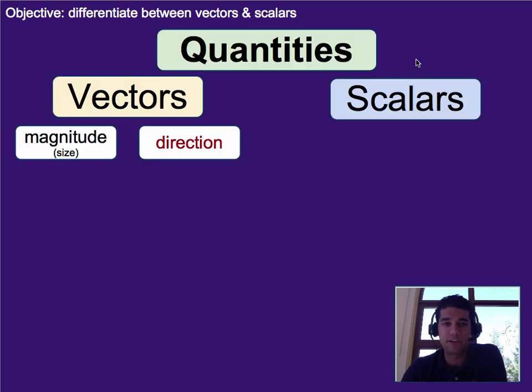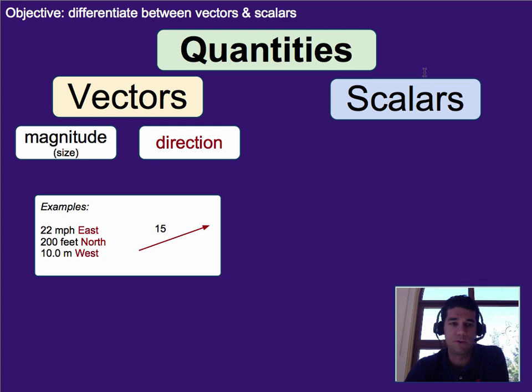Vectors have magnitude and they have direction. What that means is, for example, you have a size or something like 22, the units, and that's part of the magnitude. And then you also have the direction, such as east. It could be 200 feet north, 10 meters west. You could also just draw the direction with an arrow like this and just state what the magnitude is, or sometimes they have the actual size of the arrow indicate the magnitude. And so that's what vectors are.